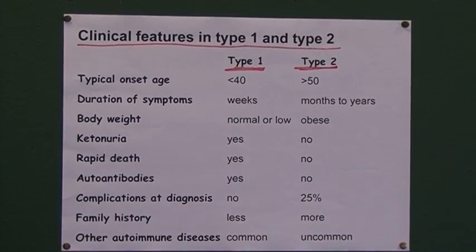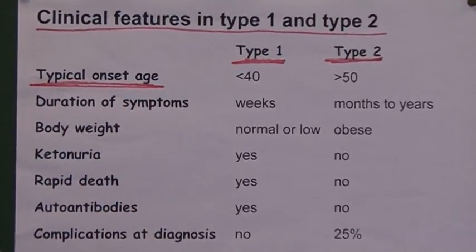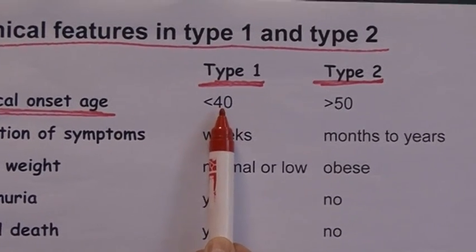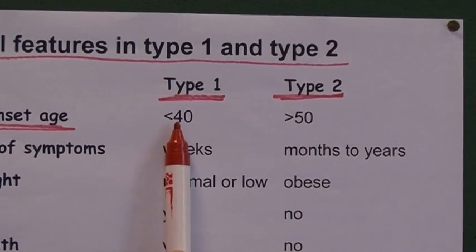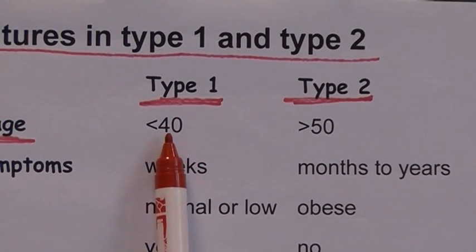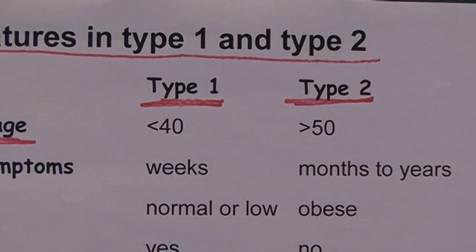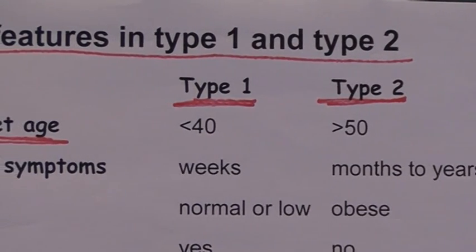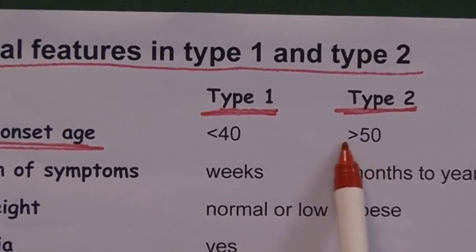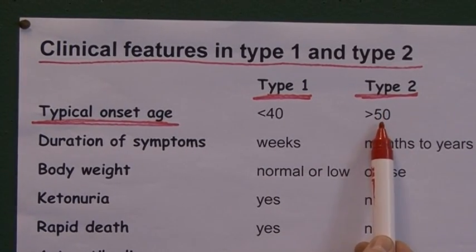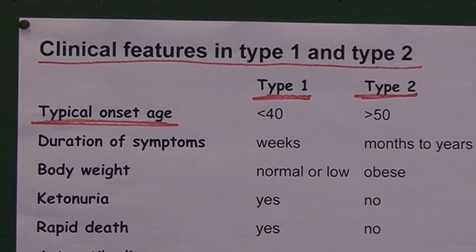The first thing we look at is typical age at onset. Most cases of type 1 present below the age of 40 — it's very often a juvenile onset, typically in teenagers. Type 2 diabetes, on the other hand, typically presents in older people in their 50s and 60s. It can come on at a younger age, but most cases are 50 or over, typically in their 50s, 60s, or even 70s at the time of diagnosis.